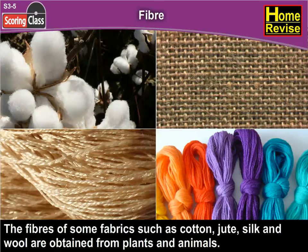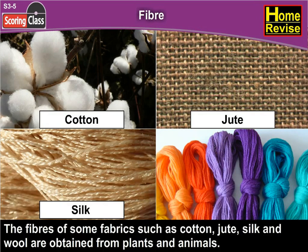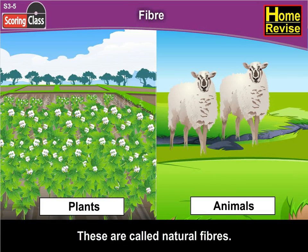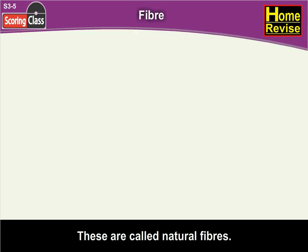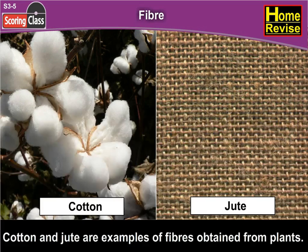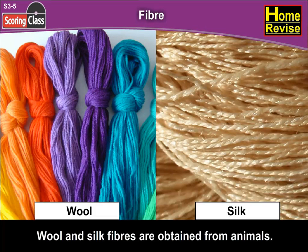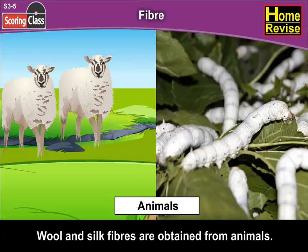The fibres of some fabrics such as cotton, jute, silk and wool are obtained from plants and animals. These are called natural fibres. Cotton and jute are examples of fibres obtained from plants, while wool and silk fibres are obtained from animals.